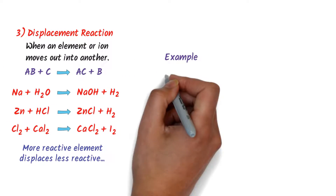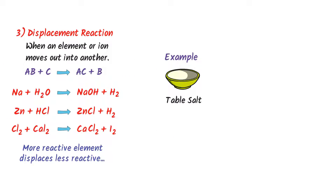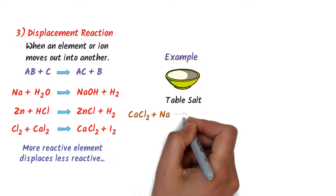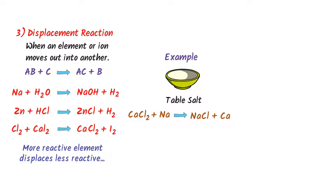The daily life example: the table salt we use can be prepared by displacement reaction. For example, calcium chloride plus sodium would react together to form sodium chloride plus calcium. Here, sodium is more reactive and calcium is less reactive, so sodium is replacing the calcium.